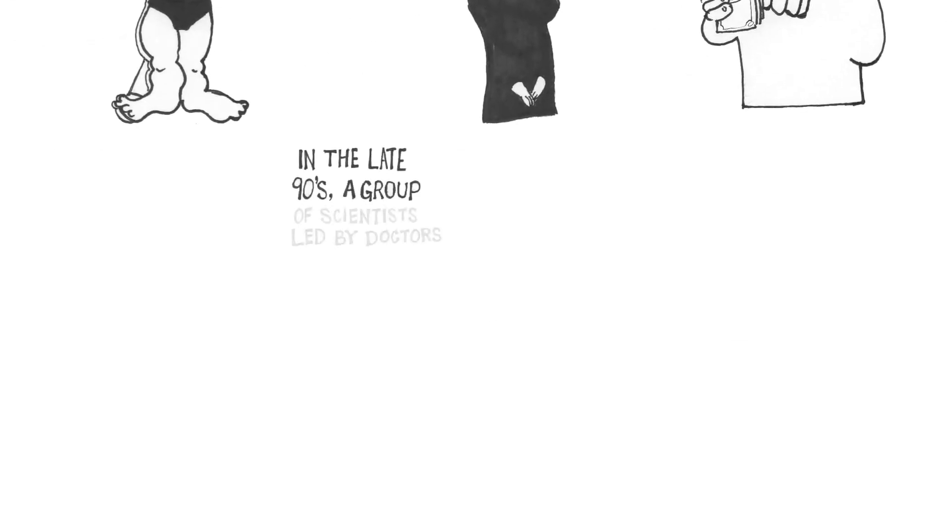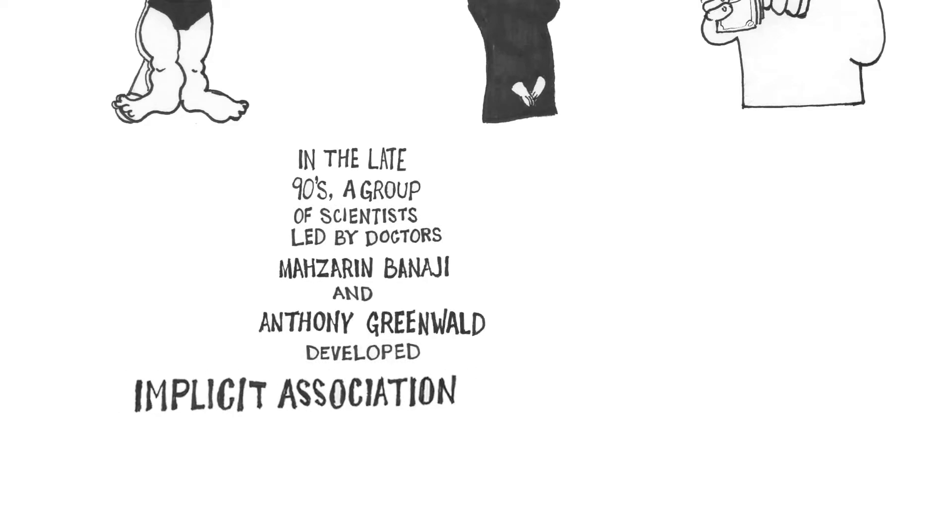In the late 90s, a group of scientists led by Drs. Mazarin Banaji and Anthony Greenwald developed implicit association testing.